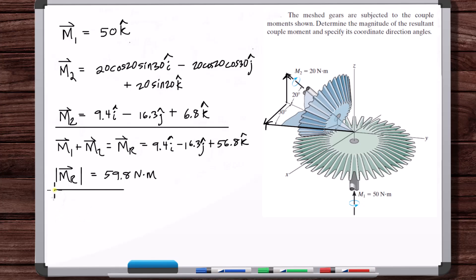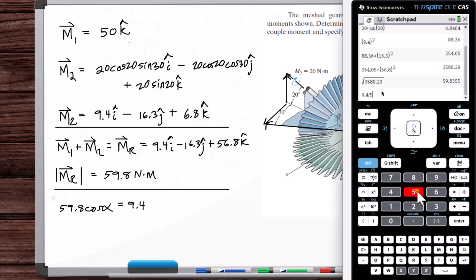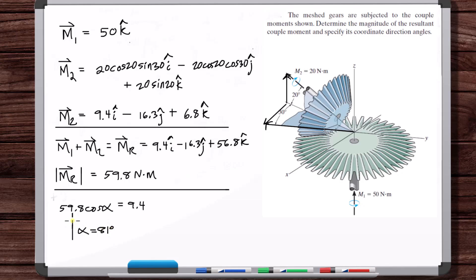So we know that 59.8 cosine of alpha is equal to 9.4. This is all from the vectors in space video. If you don't understand what we're doing, go watch the vectors in space video. And we also in chapter two, we work a lot of problems like this, where we work with coordinate direction angles and vectors and whatnot. So 9.4, we're in degrees. So 81 degrees. That's alpha. And it also did ask us for the magnitude of the resultant.